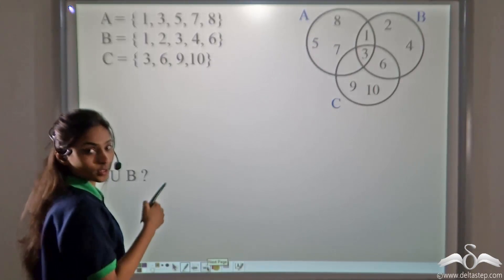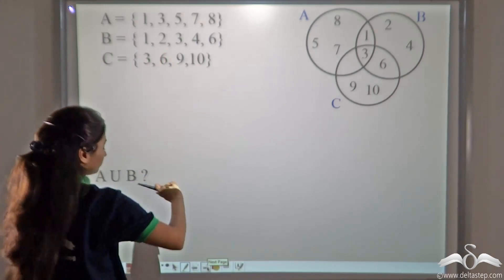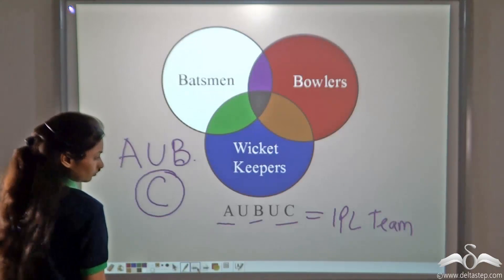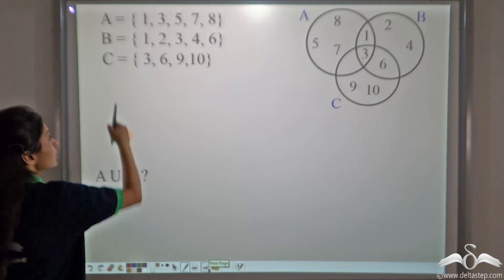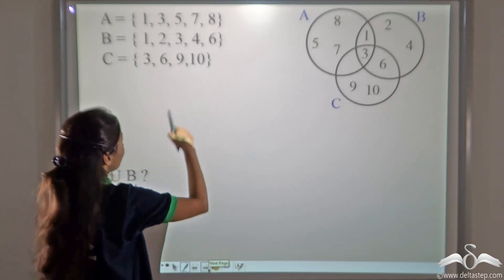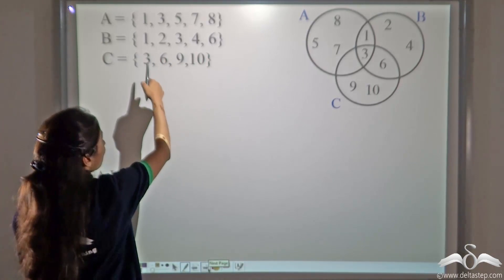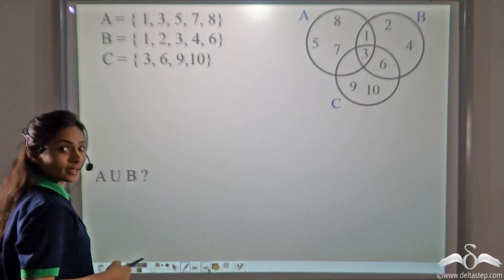Now let's do this with numbers. Your A is a set of numbers 1, 3, 5, 7 and 8 whereas B is 1, 2, 3, 4 and 6 whereas C is 3, 6, 9 and 10.